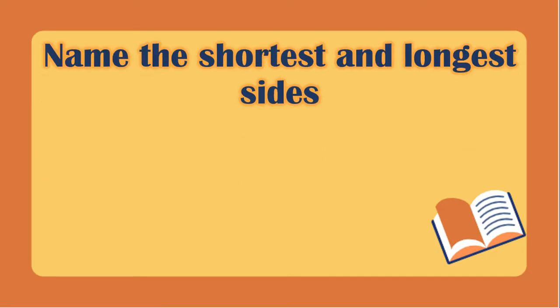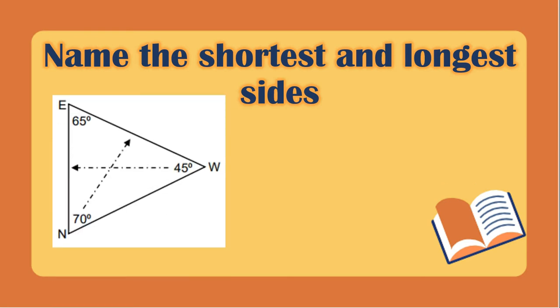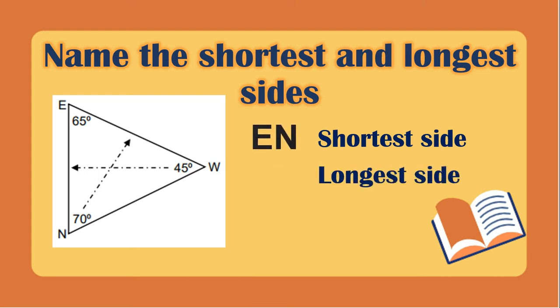We will name the shortest side and the longest side. So using this figure, for the shortest side, you need to look at the smallest angle, that is angle W, and you need to get the opposite side of it, which is side EN. For the longest side, you need to look at the largest angle, which is angle N, and the opposite side of angle N is side EW.